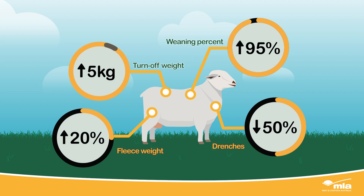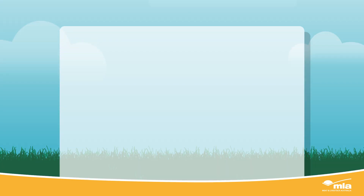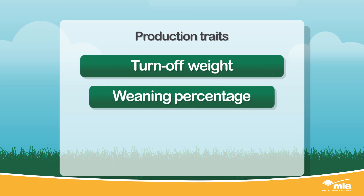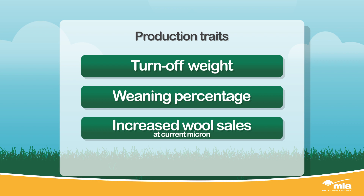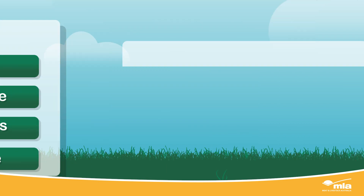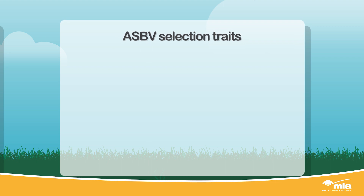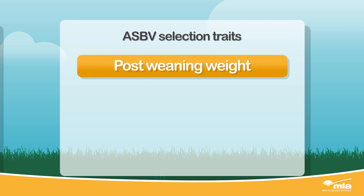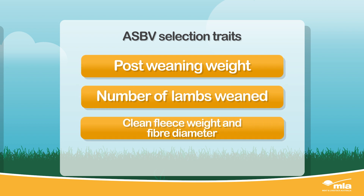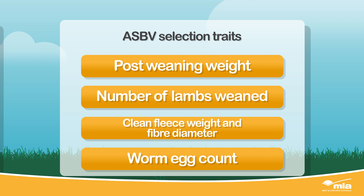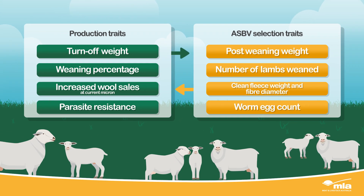With your breeding objective identified, you can now match the production traits of importance with the ASBV traits that will deliver the genetic improvements you need. Your production traits of importance might be turnoff weight, weaning percentage, increased wool sales at current micron, and parasite resistance. The matching ASBV selection traits for these would be post-weaning weight, number of lambs weaned, clean fleece weight, fiber diameter, and worm egg count. You've now identified your breeding objective and profit drivers with the matching ASBV traits to help identify which rams meet your flock's needs.